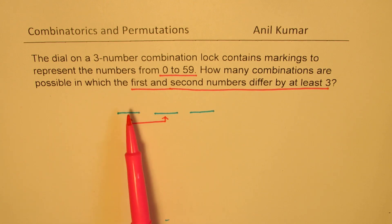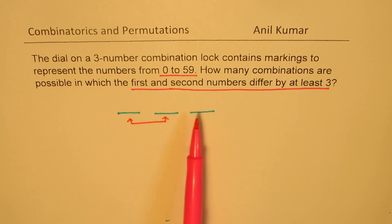The restriction for these numbers is that the second number differs by at least 3 from the first. So if I put, let's say 5 here, the number which can come there will be 5 plus 3, which is 8. Or it could be on the lower side, 5 minus 3, which is 2. So that is how you are going to work out the numbers.